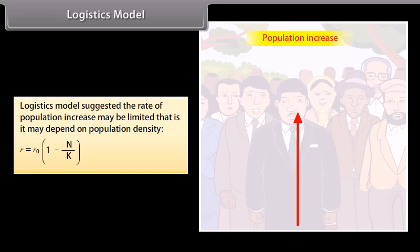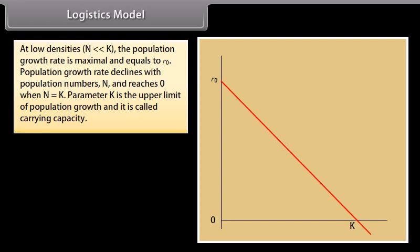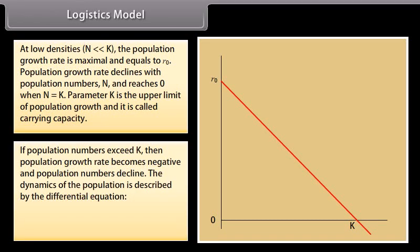The logistic model suggests that the rate of population increase may be limited and depend on population density: R = R₀ × (1 − N/K). At low densities (N much less than K), population growth rate is maximum and equals R₀. Population growth rate declines with N and reaches 0 when N equals K. The parameter K is the upper limit of population growth, called carrying capacity. If population numbers exceed K, the growth rate becomes negative and numbers decline. The dynamics are described by: dN/dt = R₀N(1 − N/K).